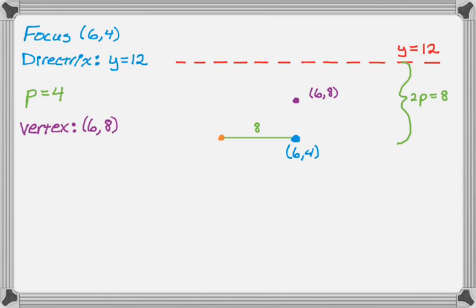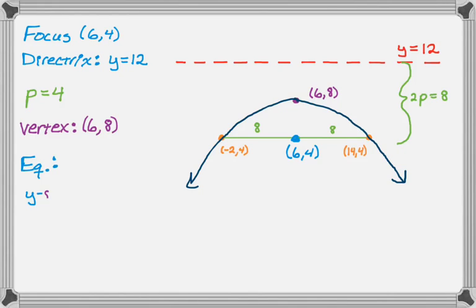And then I want to move 2p in either direction from the focus. So I'm moving parallel to the directrix, but I'm moving 2p, so 8 in either direction. So if I move 8 that way, it takes me to (-2,4). And if I move 8 in this direction, it's going to take me to (14,4). So I know those three points, so I can sketch my parabola.